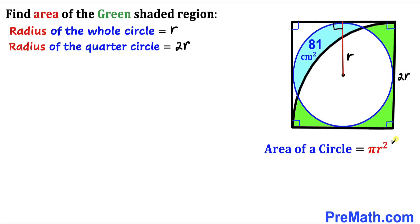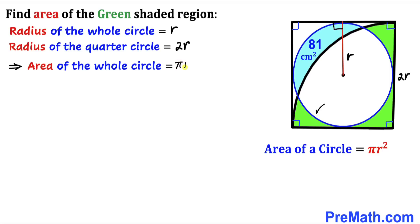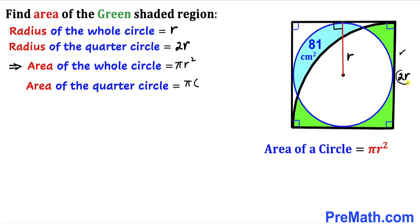Recalling the area of a circle formula: area equals π r squared. The area of the whole circle is π r squared. The area of the quarter circle uses radius 2r: that is π times (2r) squared divided by 4, which gives 4π r squared divided by 4. The 4s cancel, so the area of the quarter circle is also π r squared.